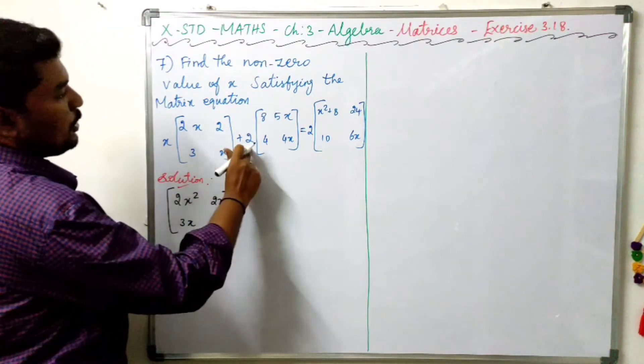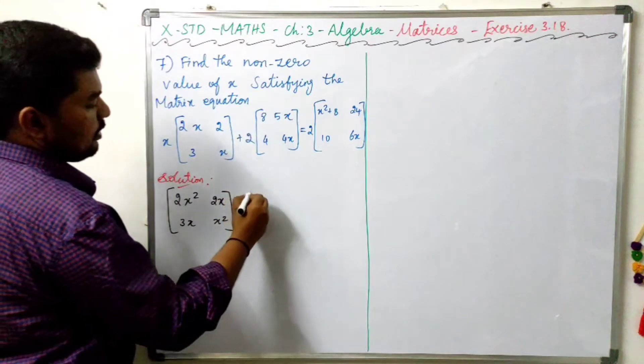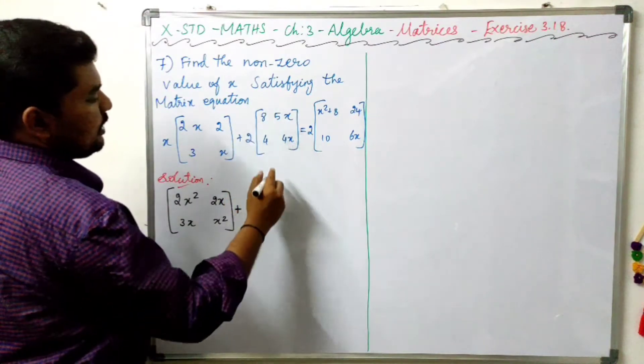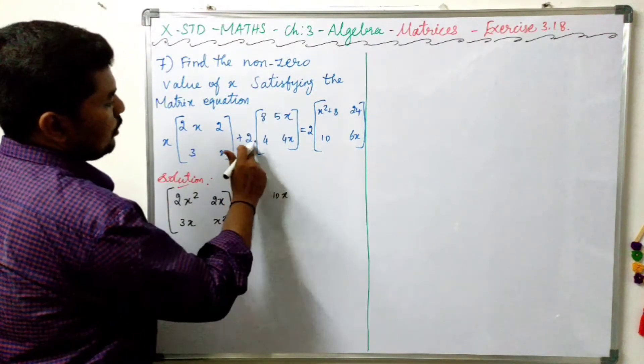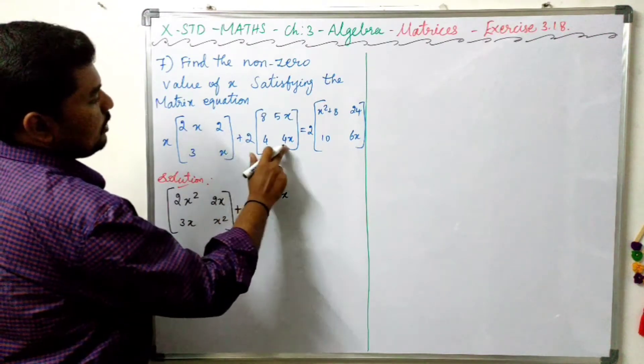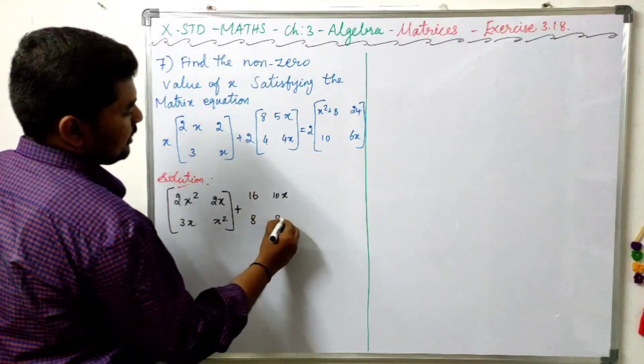Plus, 2 multiplied by 2: 8s are 16, 2 times 5 is 10x, 2 times 4 is 8. And next, 4 times 2 is 8x.